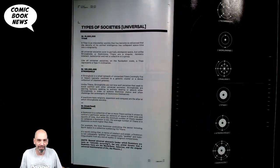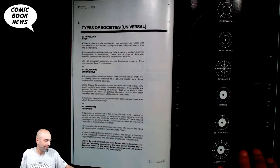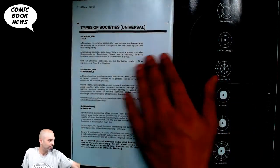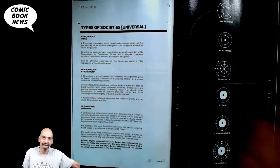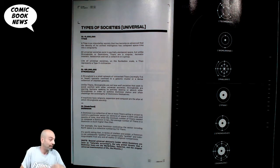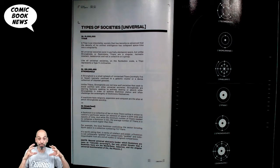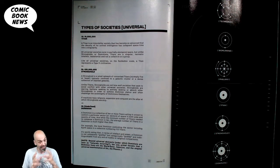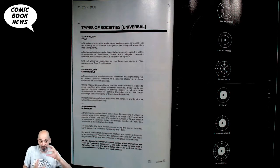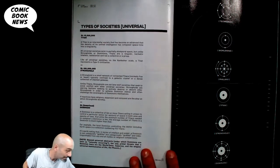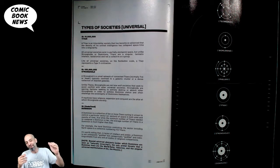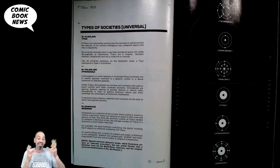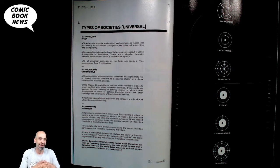The final text piece talks about these different types of universal societies. A titan is when that universal intelligence collapses on itself. A stronghold is when five or more of these intelligences get networked and connected to each other. And if you get hundreds or more of these strongholds, they become a dominion. This is typical Hickman — layers upon layers. It's not enough to have a collapsed super-intelligence; you've got to have a network of them, and then a network of networks.